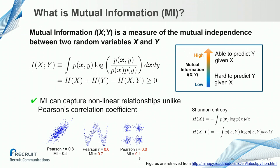What is mutual information? Mutual information between X and Y is a measure of the mutual dependence between two random variables X and Y. More intuitively, if the value of mutual information is high, we are able to predict Y given X; but when the value is low, it's hard to predict Y given X. As shown in the image below, mutual information can capture nonlinear relationships, unlike Pearson's correlation coefficient.